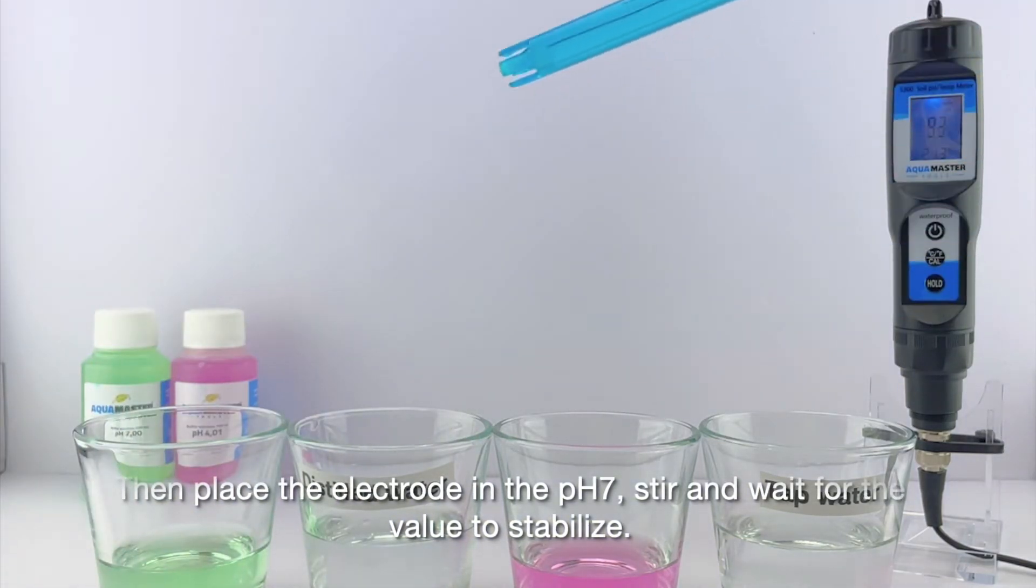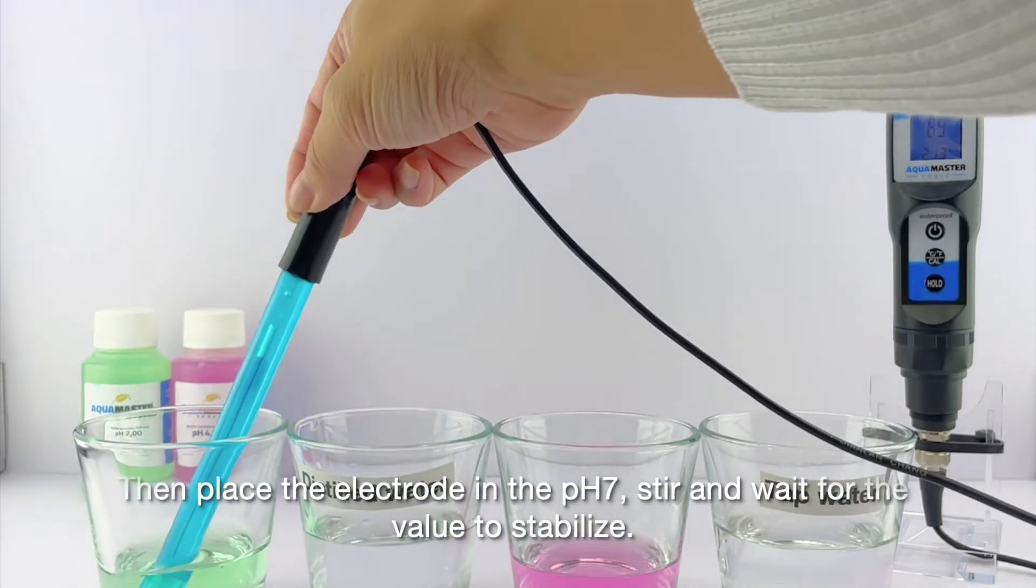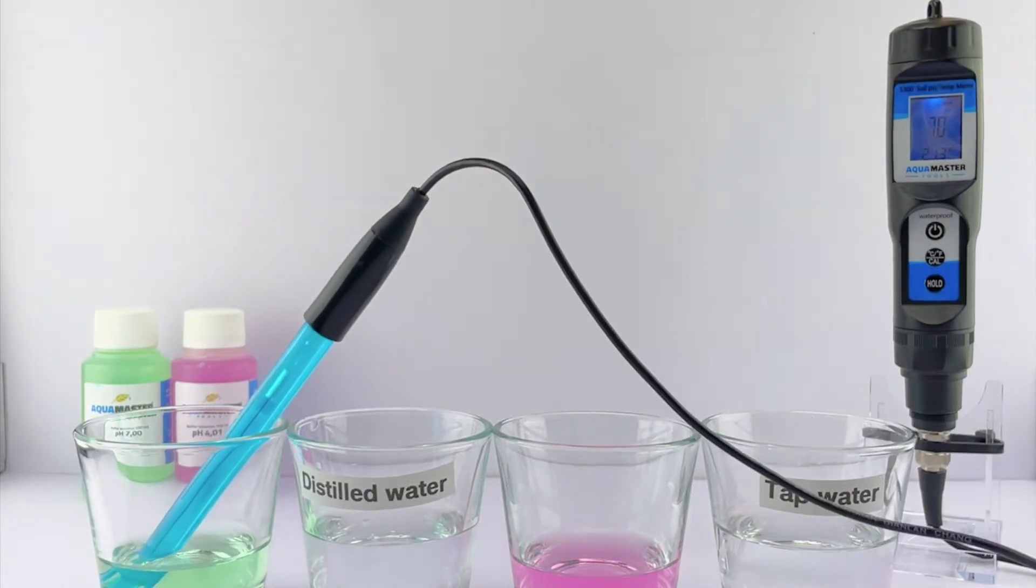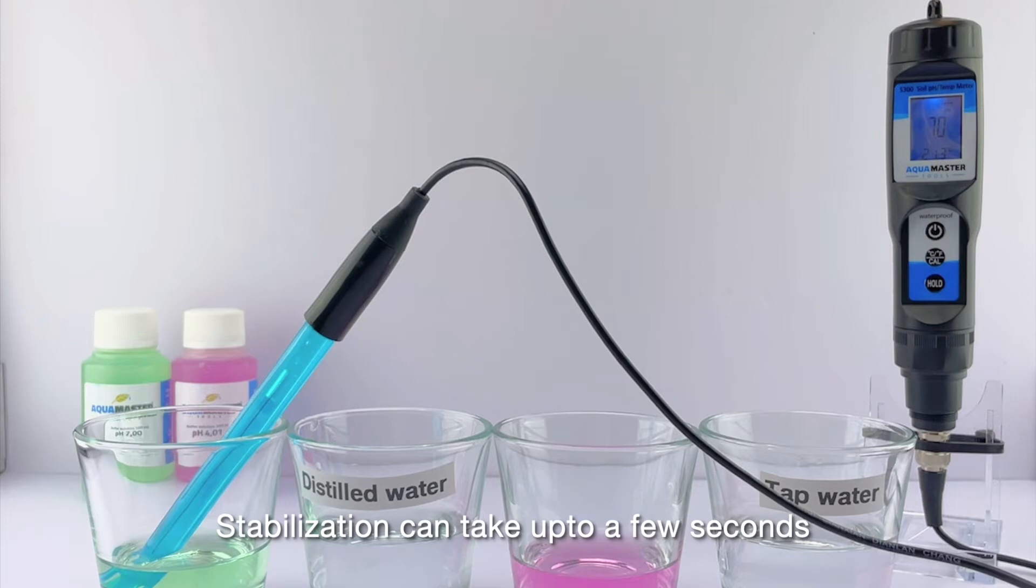Then place the electrode in the pH 7, stir and wait for the value to stabilize. Stabilization can take up to a few seconds.